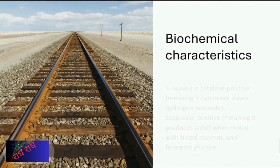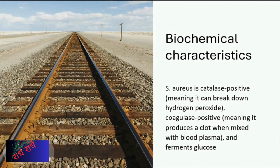Staphylococcus aureus is found in a variety of environments, including the human body. Identifying it is possible through its biochemical characteristics, such as being catalase-positive, meaning it can break down hydrogen peroxide; coagulase-positive, meaning it produces a clot when mixed with blood plasma; and it ferments glucose. Knowing and understanding these characteristics assists with identification and treatment of the bacteria.